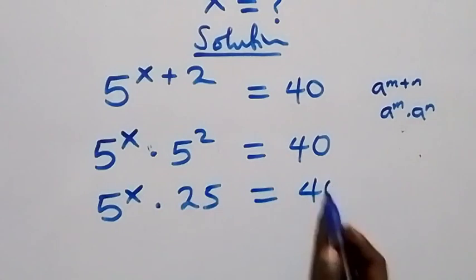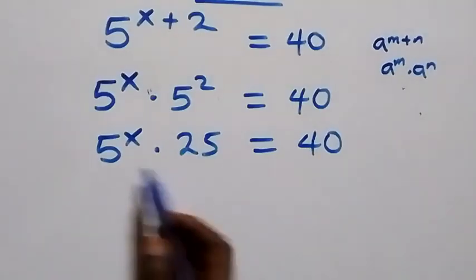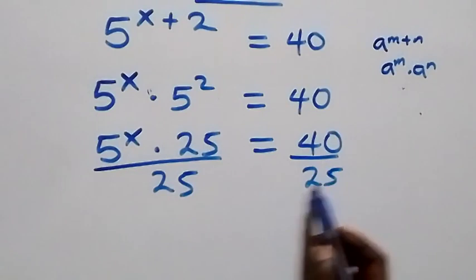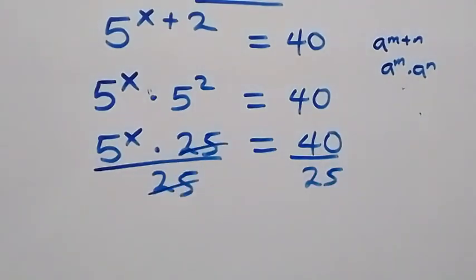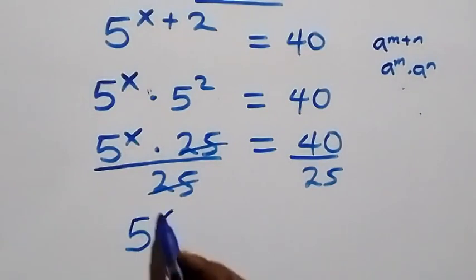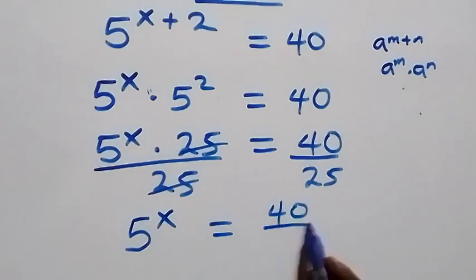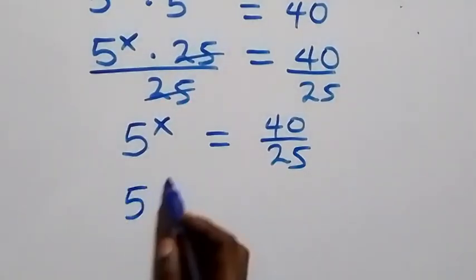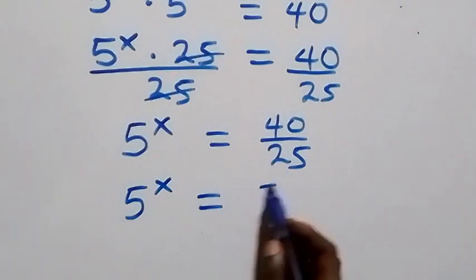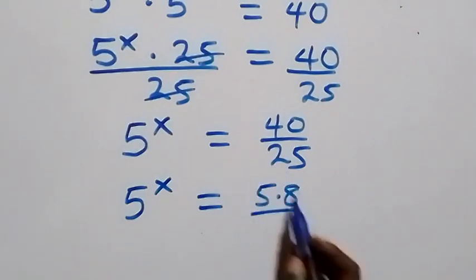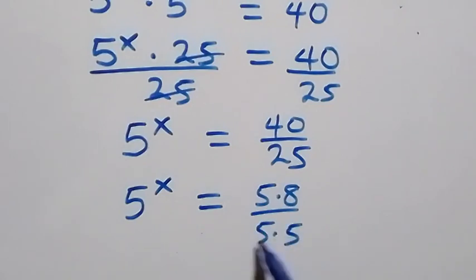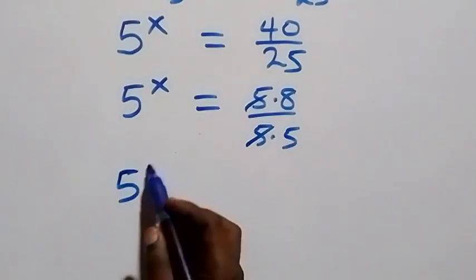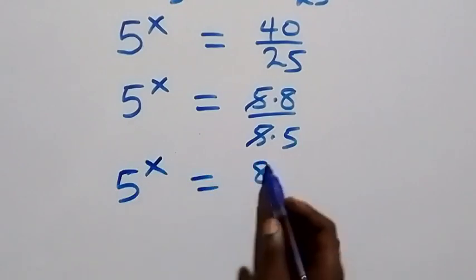That is 5 raised to power x times 25 equals 40. We divide both sides by 25 — 25 cancels here — and we have 5 raised to power x equals 40 over 25. We can rewrite 40 over 25 as 5 times 8 over 5 times 5, so the 5s cancel, giving 5 raised to power x equals 8 over 5.